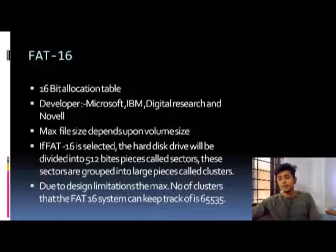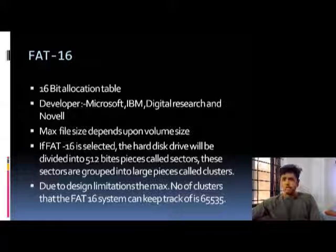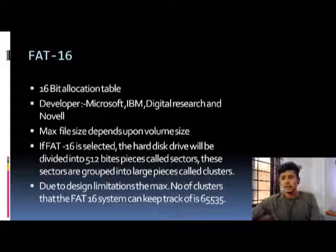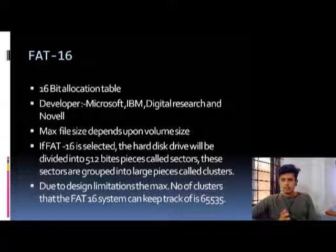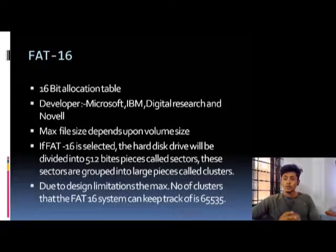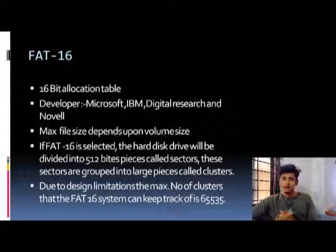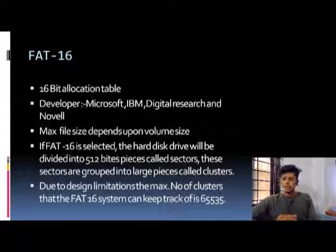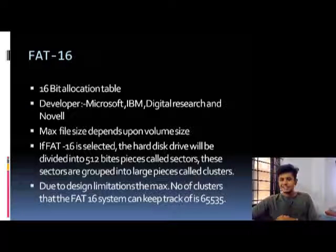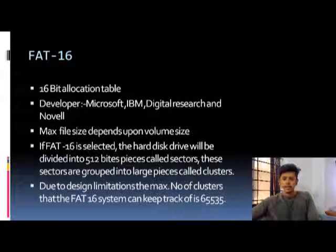The first type is FAT-16, a 16-bit allocation table. Developers include Microsoft, IBM, Digital Research, and others. Maximum file size depends upon the volume size. If FAT-16 is selected, the hard disk drive will be divided into pieces called sectors. These sectors are grouped into larger pieces called clusters. Due to design limitations, the maximum number of clusters that the FAT-16 system can keep track of is 65,535.